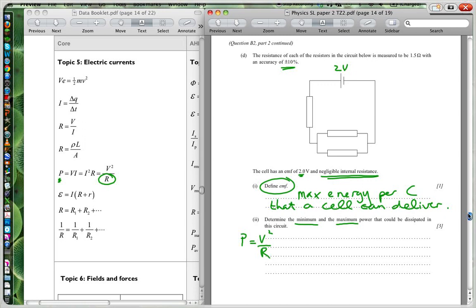We're going to get maximum power when our R is a minimum, because we're dividing by that. And we're going to get our minimum power when our total R is a maximum. Now, each of these vary by 10%. So let's start with our minimum. Our minimum R for each one is 1.35 ohms.